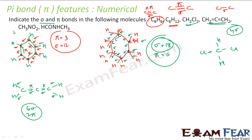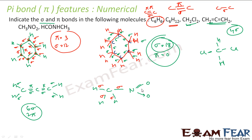Let's take CH3NO2. We see the single bonds — sigma bond, single bond, single bond, single bond, single bond, single bond — then a double bond which is one sigma and one pi, and another single bond giving one sigma. Counting: 6 sigma bonds and 1 pi bond.